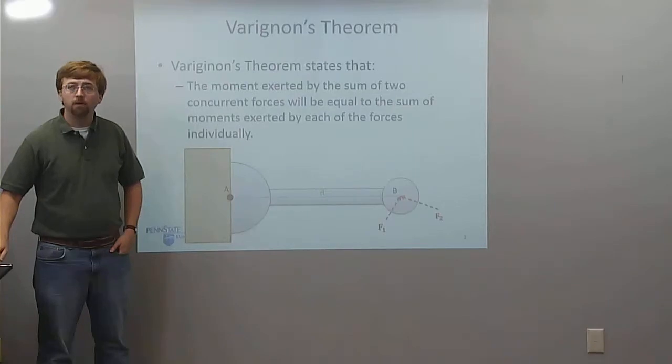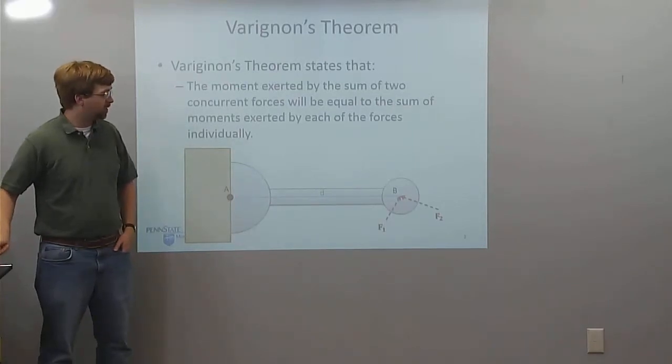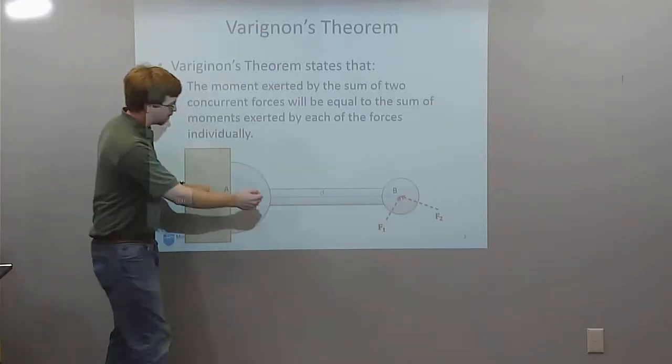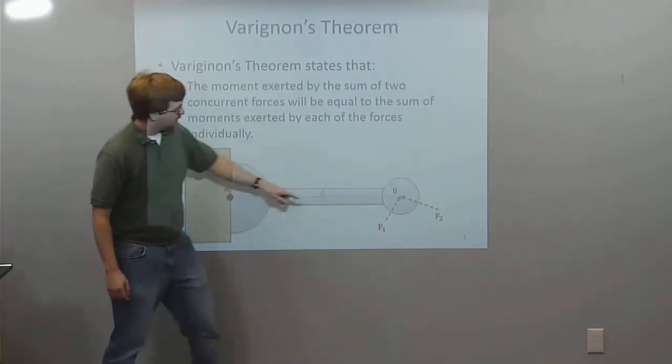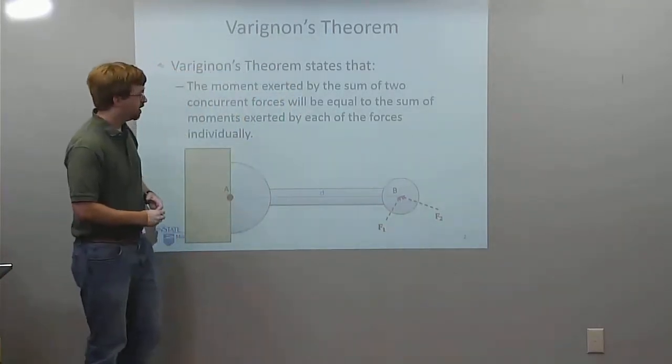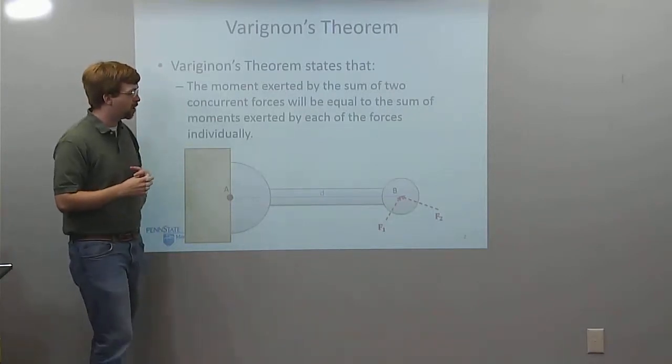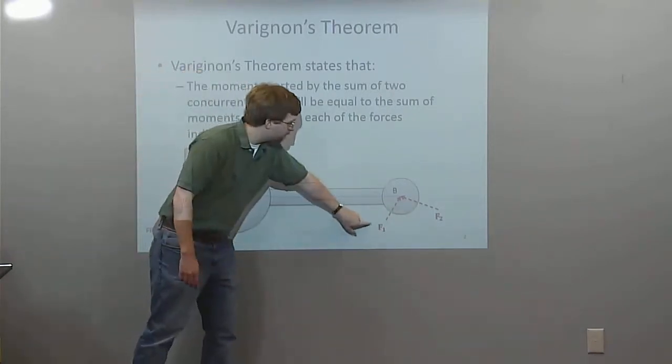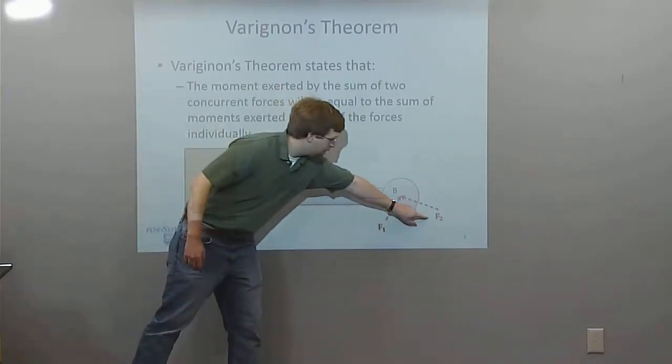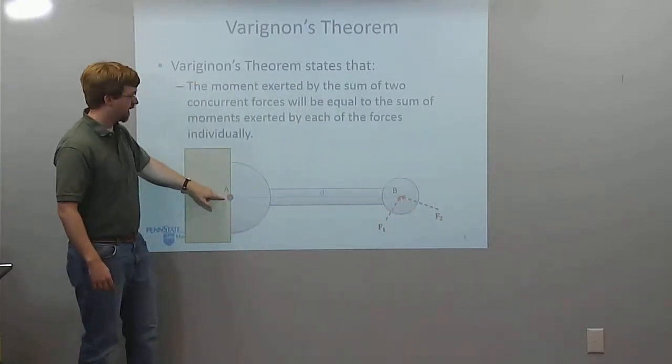So what this means, if we've got two forces acting on this lever, the lever is going to rotate about point A here, with the forces at point B. Each of these forces, force 1 and force 2, are going to exert a moment. I can find the moment that force 1 exerts about point A, and the moment that force 2 exerts about point A.